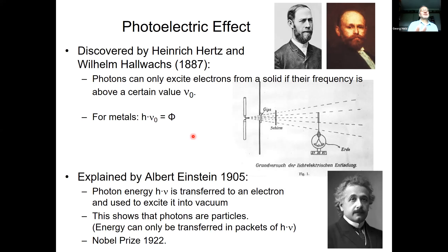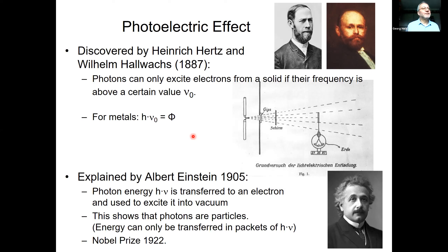It took another 20 years and a genius like Albert Einstein to explain that finding. What Einstein discovered — now common knowledge — is that photons can only transfer their energy in packages of hν, h being Planck's constant and ν the frequency of the light. For this, Einstein received the Nobel Prize, as it was really the foundation of quantum mechanics. Interestingly, he never received the Nobel Prize for the theory of relativity — this photoelectric work was what the prize was actually awarded for.